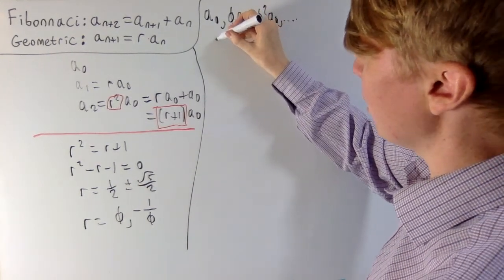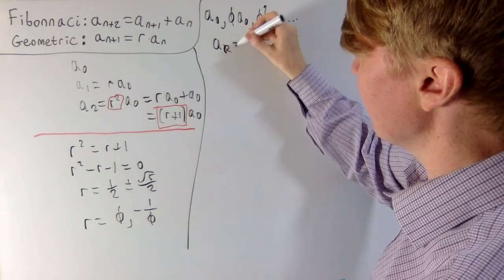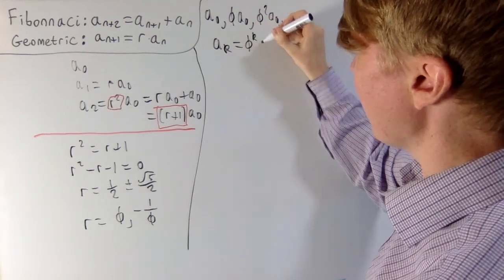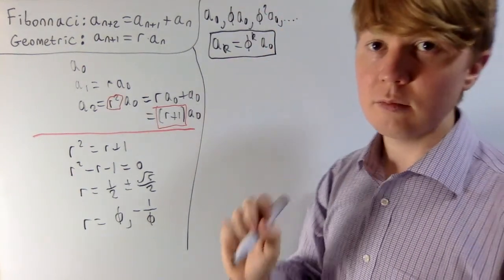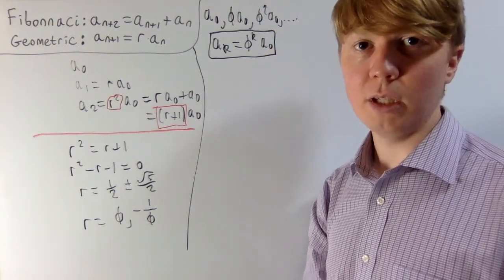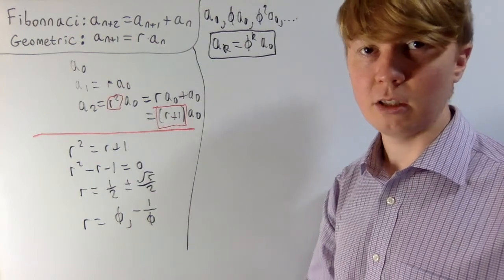So what we're saying here is that our kth term, ak, is phi to the power of k multiplied by your initial value a0. So this is certainly a geometric sequence, but now we need to check, is this actually a Fibonacci sequence as well?